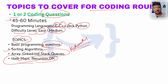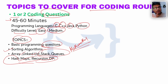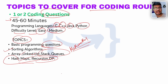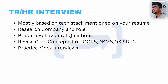Hashmaps and recursion are also topics to be aware of. Don't focus too much on advanced dynamic programming, but basic recursion questions like Fibonacci-type recursive relations can be asked. Hashmaps have also repeated many times in IBM coding assessments, so these are important areas to prepare.